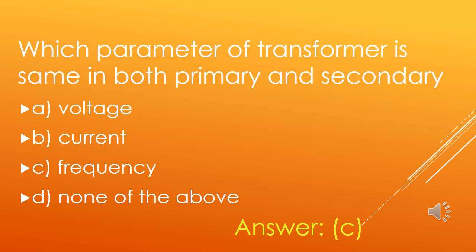Which parameter of a transformer is the same in both primary and secondary? A. Voltage, B. Current, C. Frequency, D. None of the above. Voltage or current may vary in both sides, but frequency does not vary in both sides. So, option C is the right answer.